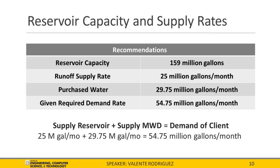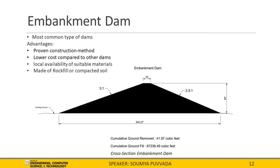I will now introduce the dam used for this project. The dam our team chose is the embankment dam, the most common type of dam, with advantages including proven construction methods, lower cost compared to other dams, and local availability of suitable materials. They are made of rock fill or compacted soil to control permeability and seepage. The cross section has a downstream slope of 3-to-1 and upstream slope of 2.5-to-1. The crest length is 16 feet with a dam height of 60 feet. The cumulative ground removed is 42 cubic feet and cumulative ground fill is 87,000 cubic feet.